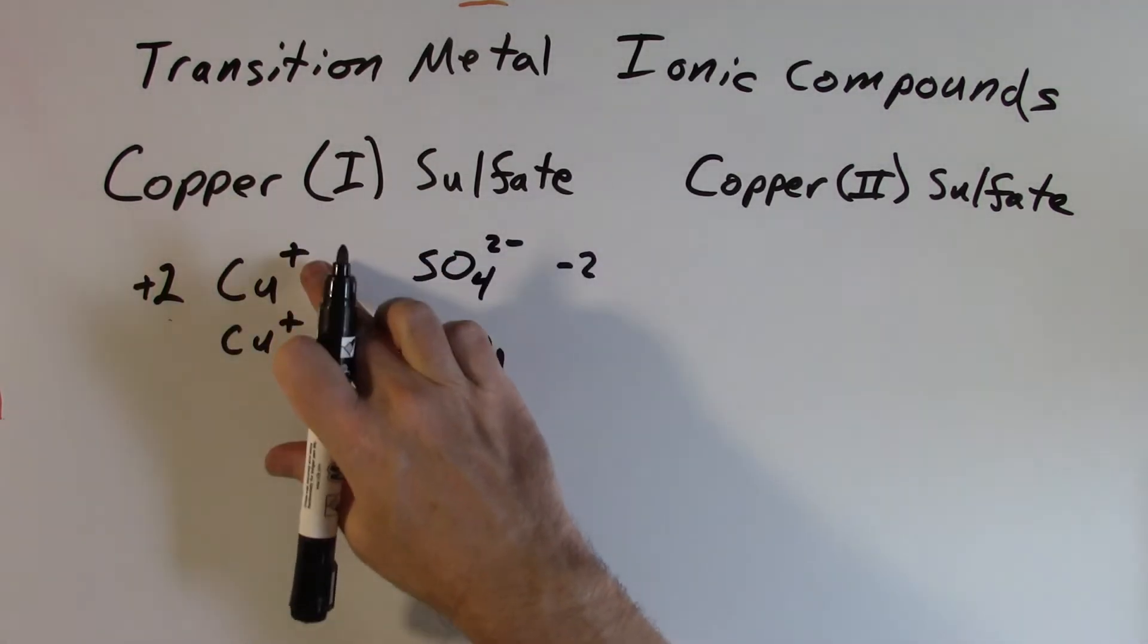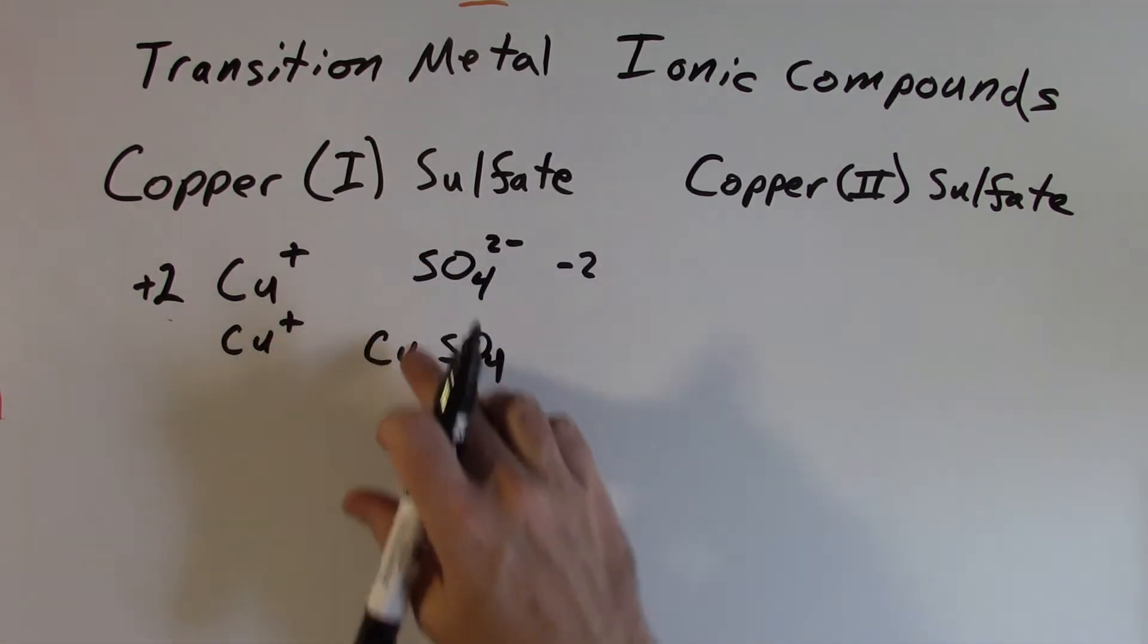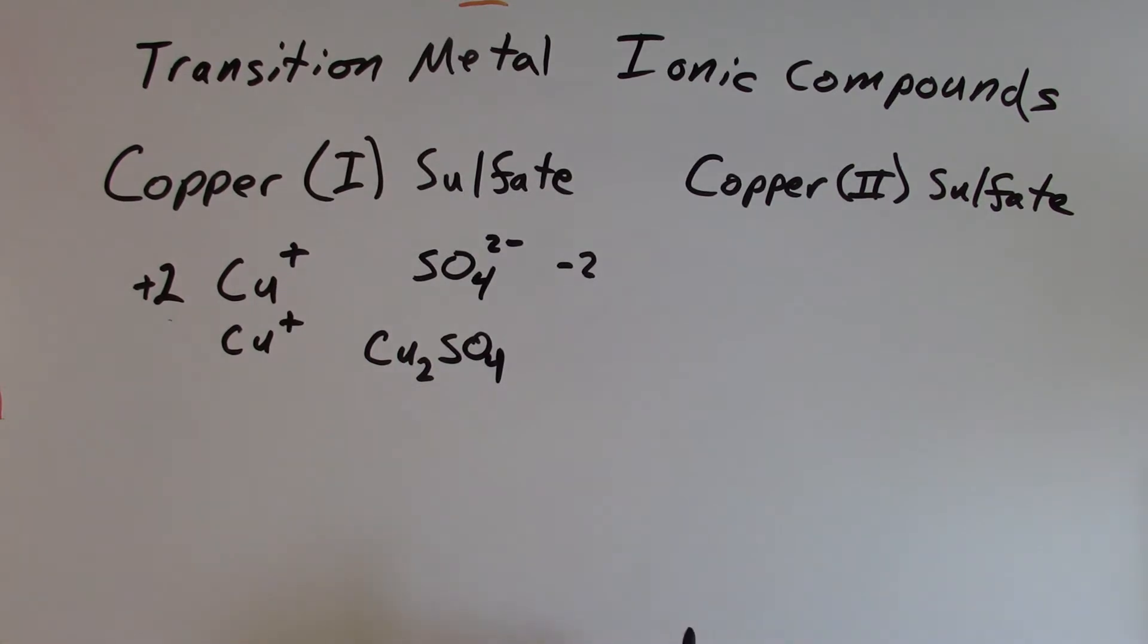So again, the Roman numeral is telling you what the charge is on each copper atom, not how many copper atoms you're going to have in that formula.